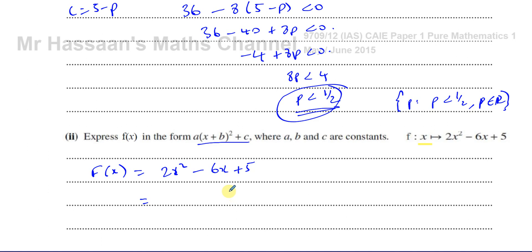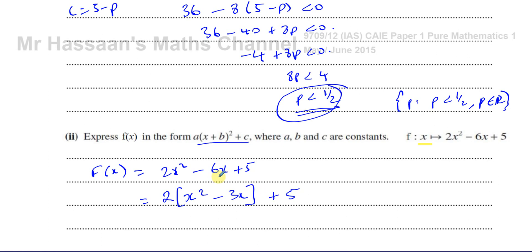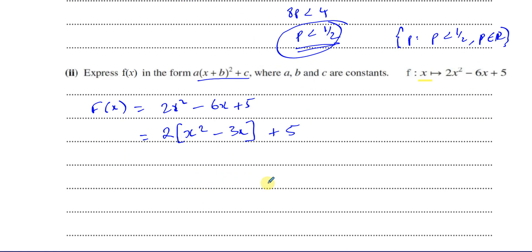To complete the square, the coefficient of x² inside the bracket must be 1. So I take out the factor of 2: 2(x² − 3x) + 5. I close the bracket there and leave the +5 outside, concentrating on just those two terms inside the bracket where the x² has coefficient 1.